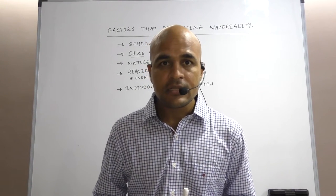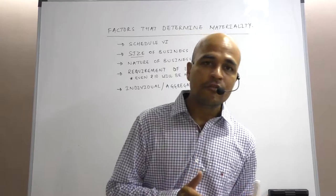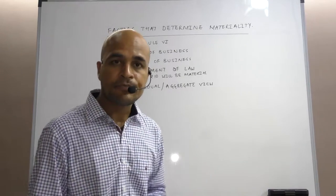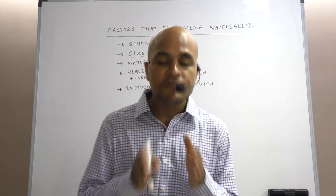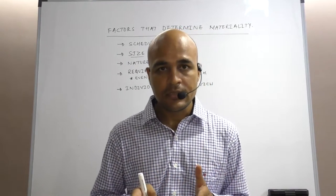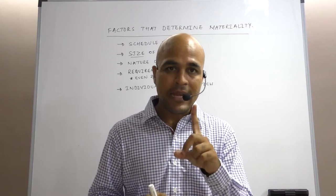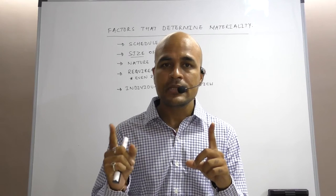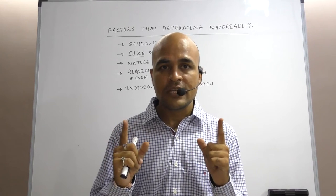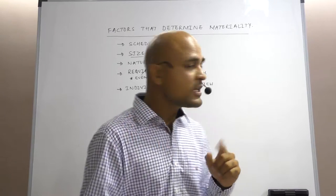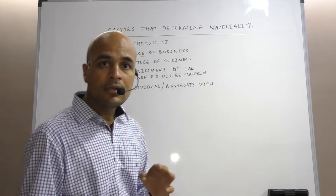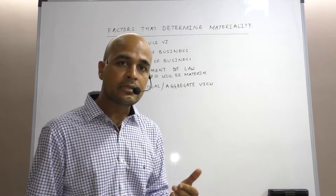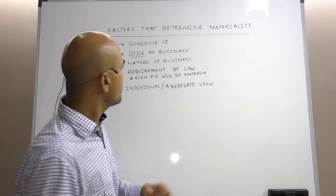Friends, now we will discuss factors that influence materiality level. The first factor being Schedule 6, which we have already discussed. If there is any item of income or expense and if it exceeds 1 lakh rupee or 1% from revenue from operation, whichever is higher, if my income or expense exceeds this limit, then such income or expense becomes a material item. It has to be disclosed separately and the auditor should also consider the same in his audit.